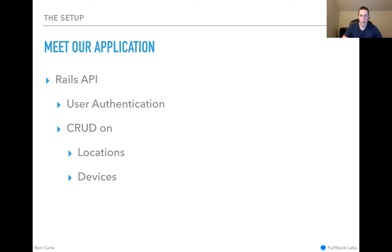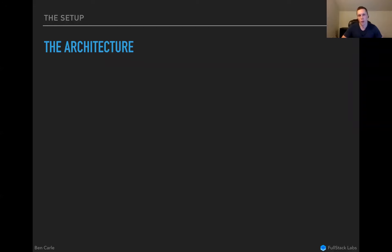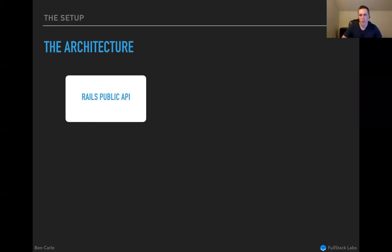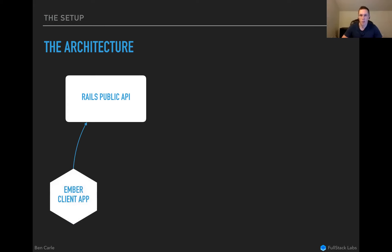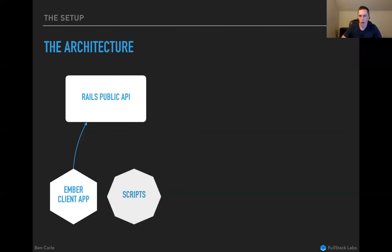A bit more detail on the architecture: the Rails API is the public-facing API. On the front end we have an Ember JavaScript client app — the main point for most users to interact with the API, their user interface for managing devices. There are also some power users writing scripts and interacting with the API directly. Mostly this was internal for the company, but from time to time some clients would be doing this as well.